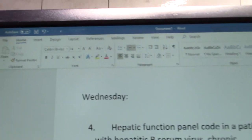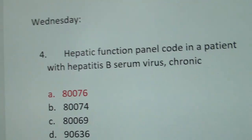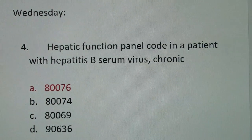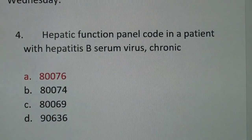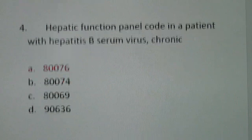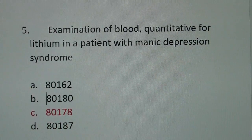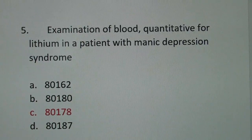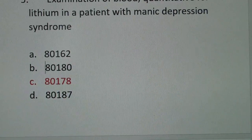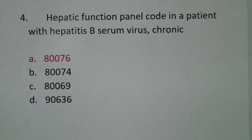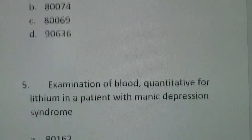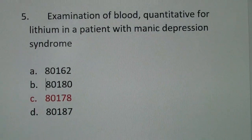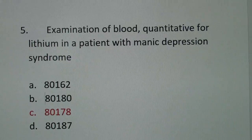Here are the answers to yesterday's questions. The Hepatic Function Panel Code in a patient with Hepatitis B Serum Virus Chronic is A80076. Examination of blood quantitative for lithium in a patient with manic depression syndrome — the answer is C80178. How'd you do on those two?